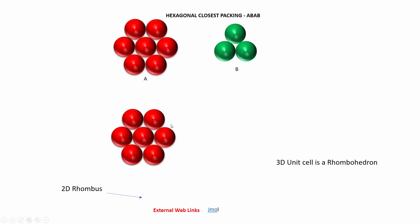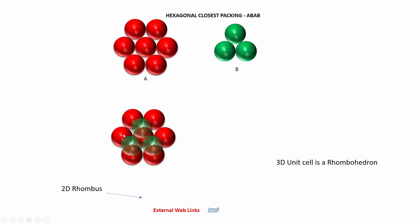How many atoms are in a hexagonal close-packed unit cell? That's formed by taking layer A — the closest-packed layer with six neighbors for each atom — sliding layer B on top of it over the holes on layer A, and sliding another layer A on top of that.